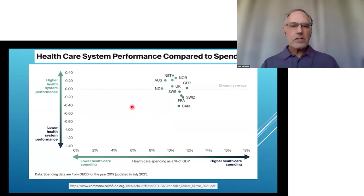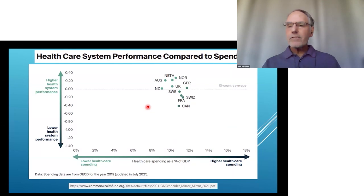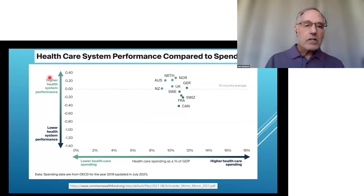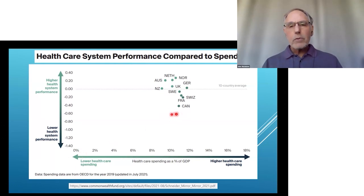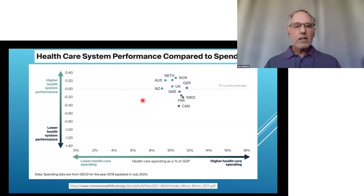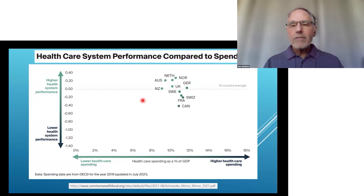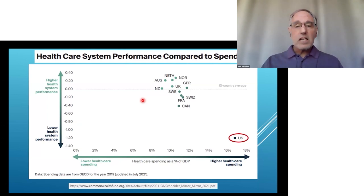Looking at the function of the American healthcare system, a study compared access to care, process of care, administrative efficiency, equity, and healthcare outcomes in 10 countries. The other nine countries grouped quite tightly in terms of the percentage of GDP they spend on healthcare and the performance of their systems. But the United States is a total outlier — way off the chart in both cost and poor system performance.